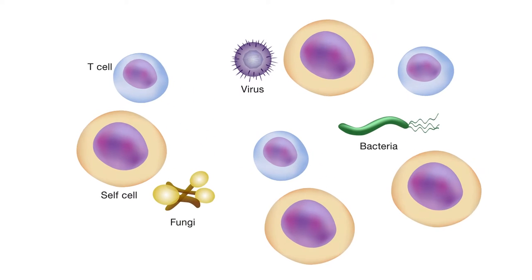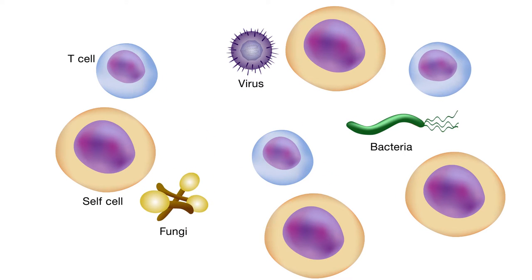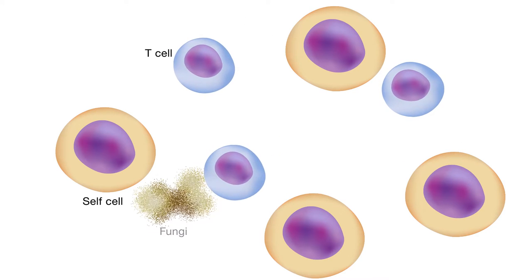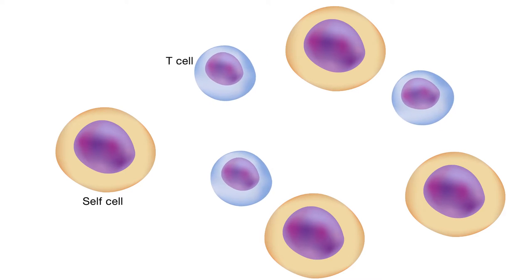The immune system has the important job of recognizing and eliminating dangerous pathogens such as bacteria, viruses, or fungi, while recognizing the body's own cells and leaving them alone.